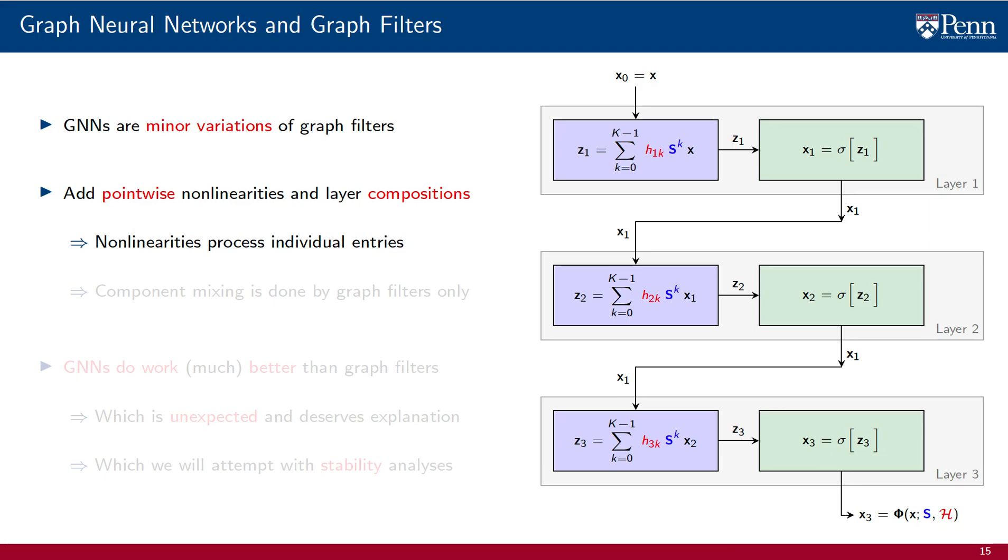Their only difference with graph filters is the addition of pointwise nonlinearities and layer compositions. Since the nonlinearities are pointwise, they process signal entries individually. There is no mixing of components carried out by a nonlinear transformation. All of the component mixing that goes on in a GNN is carried out by linear transformations. More precisely, it is carried out by graph filters.